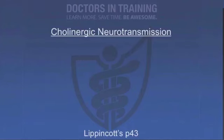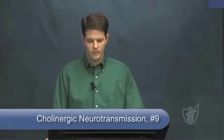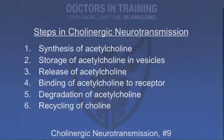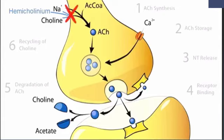Let's talk about how cholinergic transmission works. There are six steps to cholinergic neurotransmission: synthesis, storage, release, binding of acetylcholine to a receptor, degradation of acetylcholine in the synaptic cleft, and recycling of choline. The first step is synthesis. Choline is transported into the cytoplasm by a sodium co-transporter using the sodium gradient — this is the rate-limiting step in the production of acetylcholine. There's a drug called hemicholinium that inhibits this co-transporter.